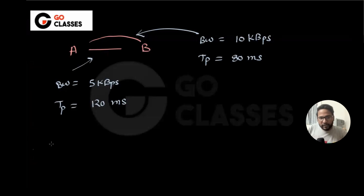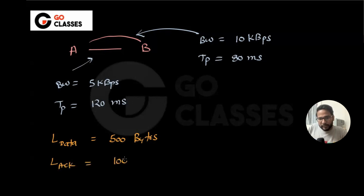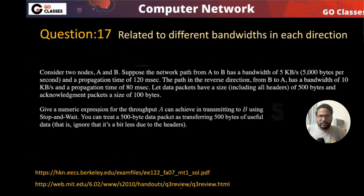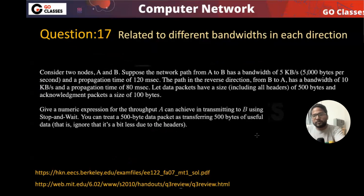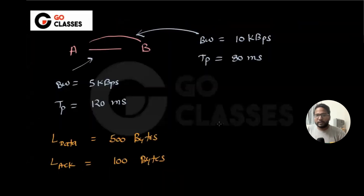The length of data is 500 bytes and the length of ACK is 100 bytes. Now they are asking: give the numeric expression for the throughput A can achieve transmitting to B using stop-and-wait. You can treat 500-byte data as 500 bytes of useful data, meaning there is no header.